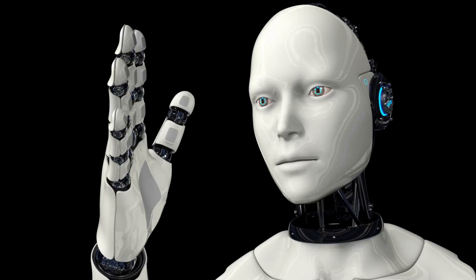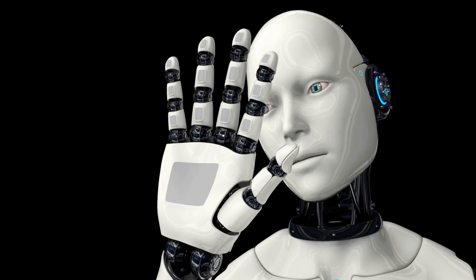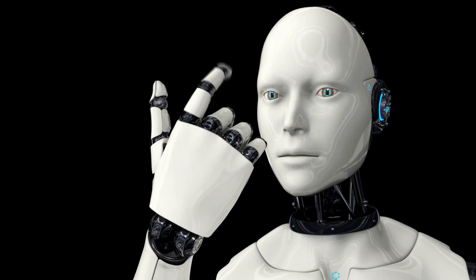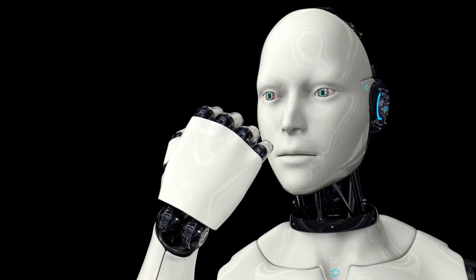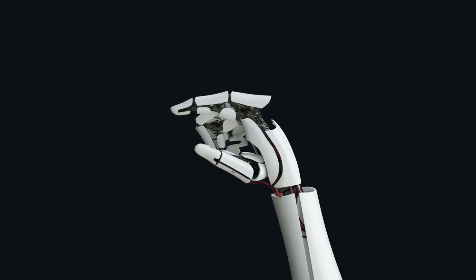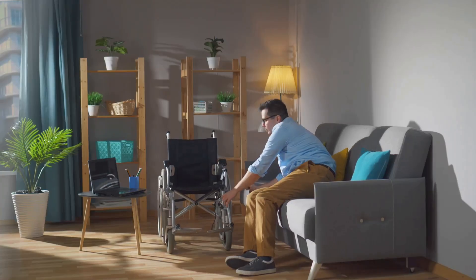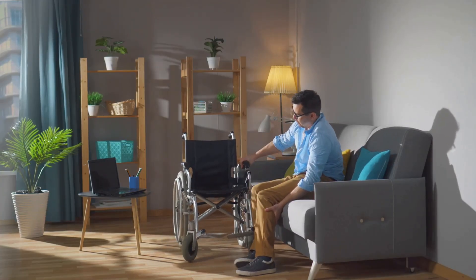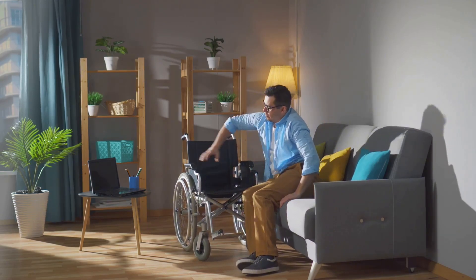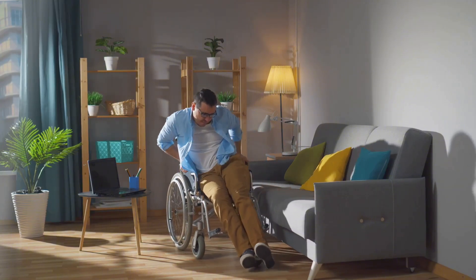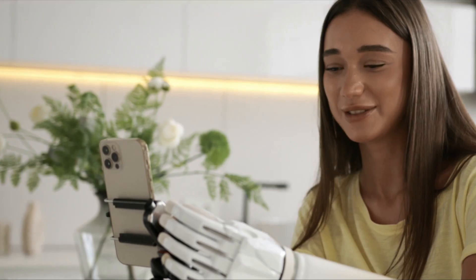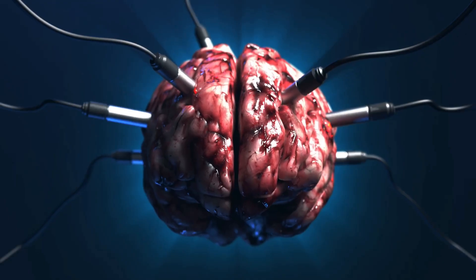A BCI acts as a translator, picking up the electrical impulses from your brain, decoding them, and then transmitting them to an external device. The device then acts on those commands, whether it's moving a robotic arm, controlling a wheelchair, or even typing on a computer. The beauty of BCIs is in their potential to restore communication and control to those who have lost it due to injury or disease. For someone with paralysis, a BCI could be the key to regaining independence, allowing them to interact with the world in ways they might have thought were lost forever.